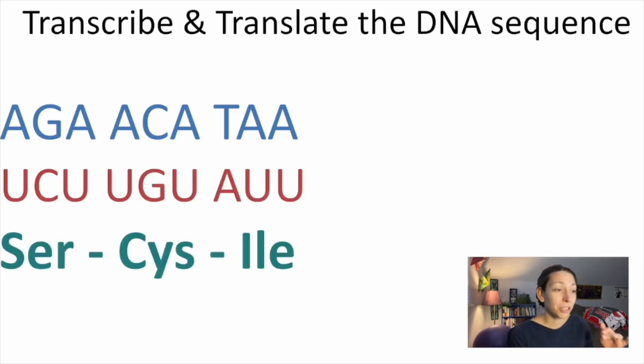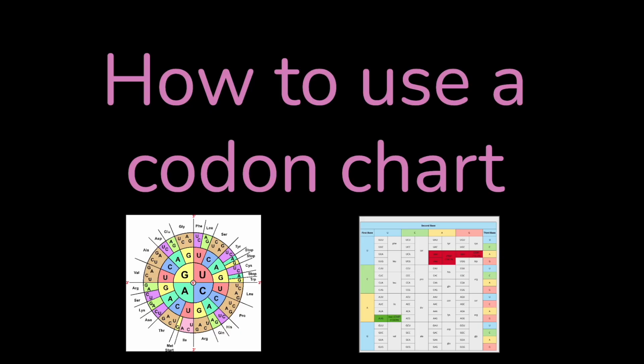All right. So the mRNA would be U-C-U-U-G-U-A-U-U. And then our amino acid sequence would be S-E-R-C-Y-S and I-L-E if we're going by the abbreviations, serine, cysteine, and isoleucine. Thanks so much for watching and good luck using your codon charts.